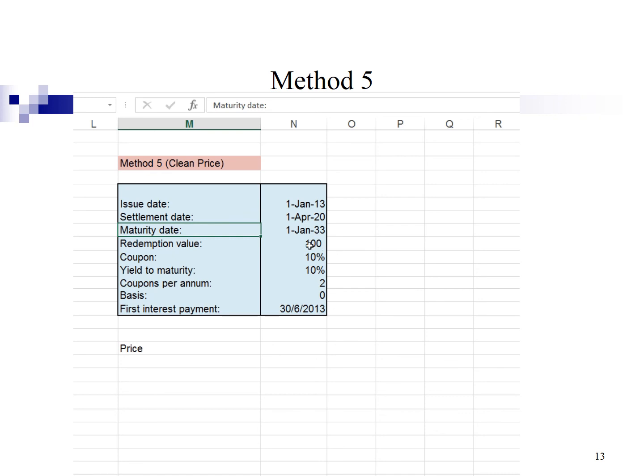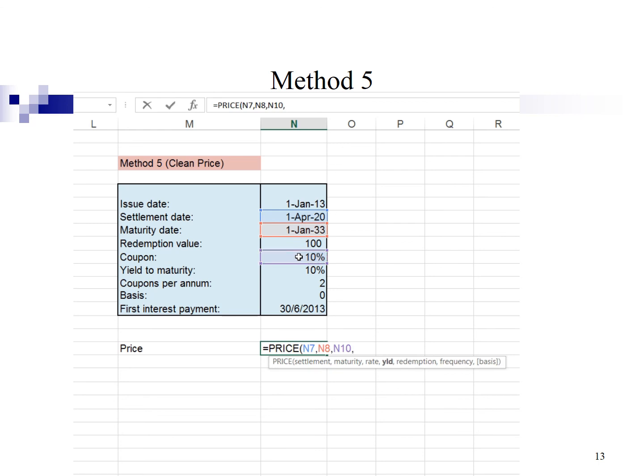The redemption value is 100 and the coupon rate is 10% payable semi-annually. The bond is discounted at yield to maturity of 10%. I'm going to calculate the bond price by typing equal P-R-I-C-E, open bracket, point the settlement date, comma, point the maturity date, comma, point the coupon interest rate, comma, point the yield, 10%, comma.